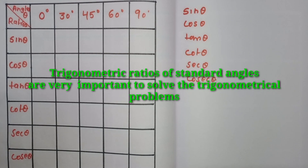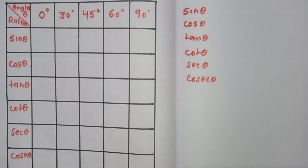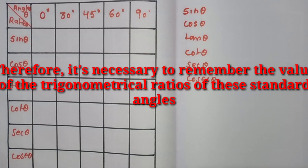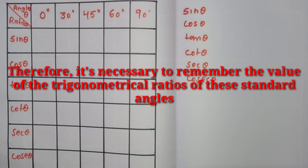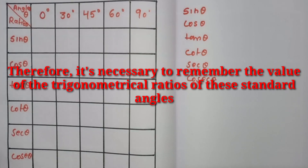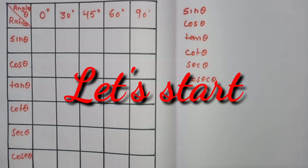The trigonometric ratios of standard angles are very important to solve trigonometric problems. This table helps us solve trigonometric problems. Therefore, it is necessary to remember the values of the trigonometric ratios of these specific — also called standard — angles. Let's start building the trigonometric table.